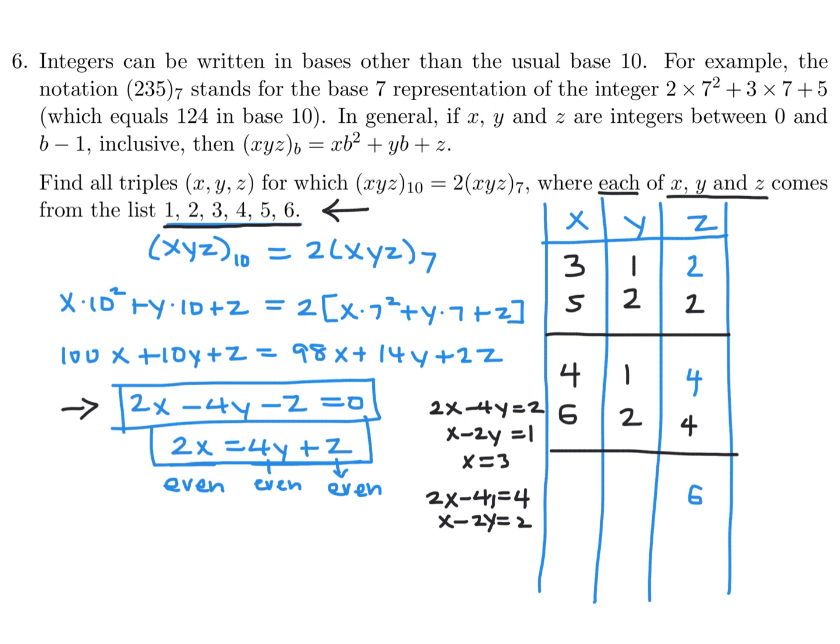If Z is 6, then it would be 2X minus 4Y is 6, so X minus 2Y is 3. If Y is 1, then X would be 5. And then I think that's it. Then you would get values that are greater than 5 for X, and that is not valid. So we got these triples, those 5, and I think that completes the question.